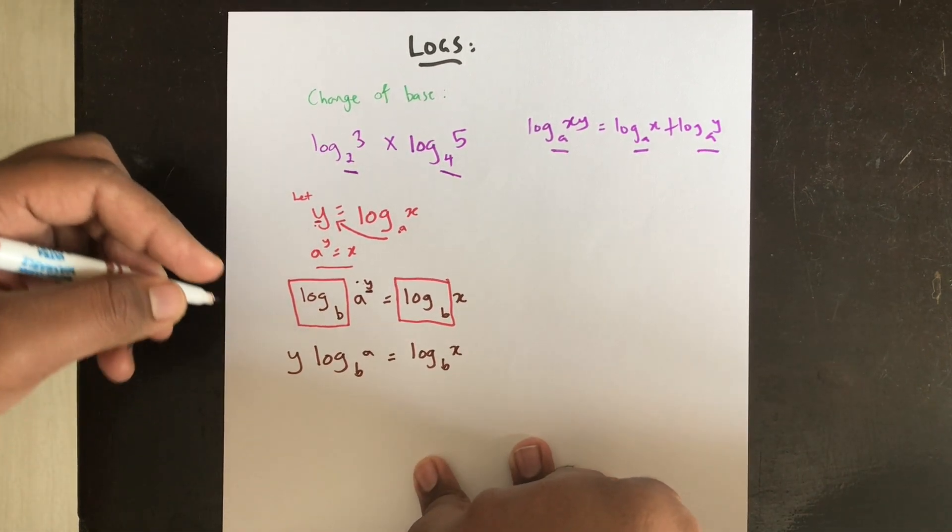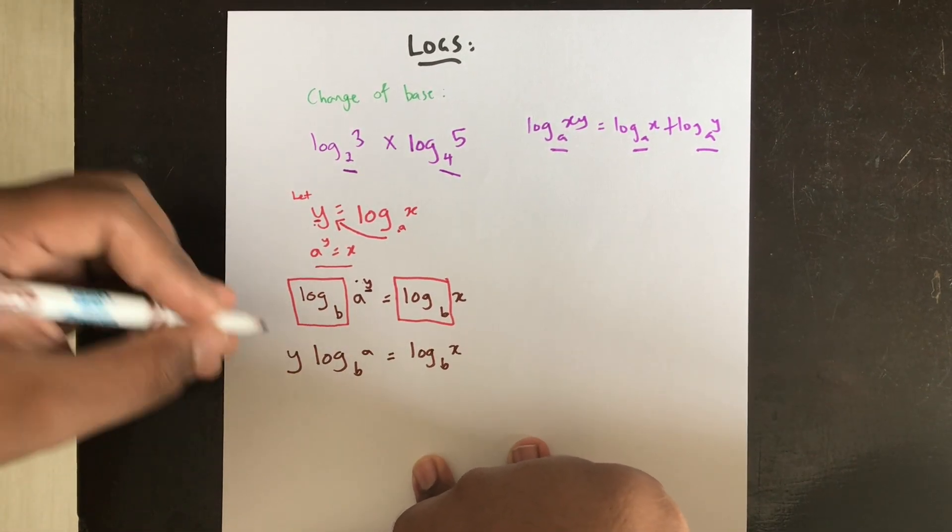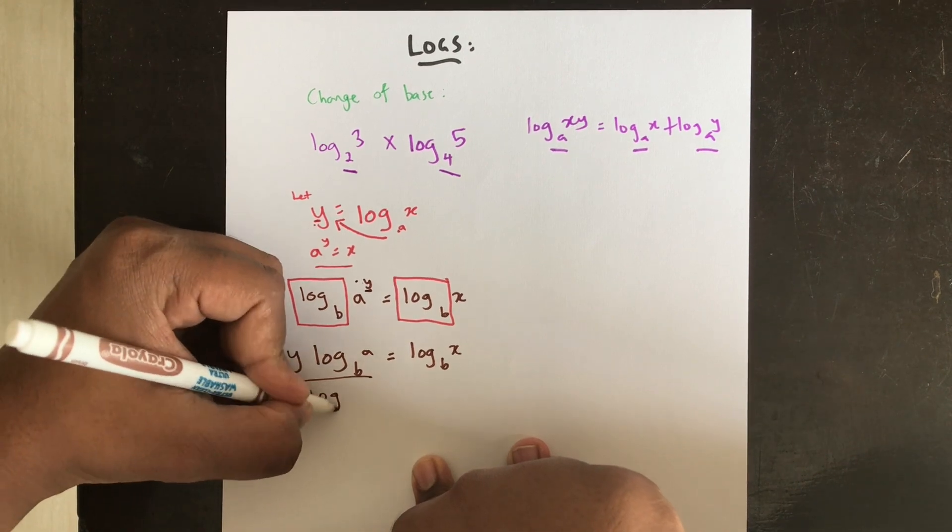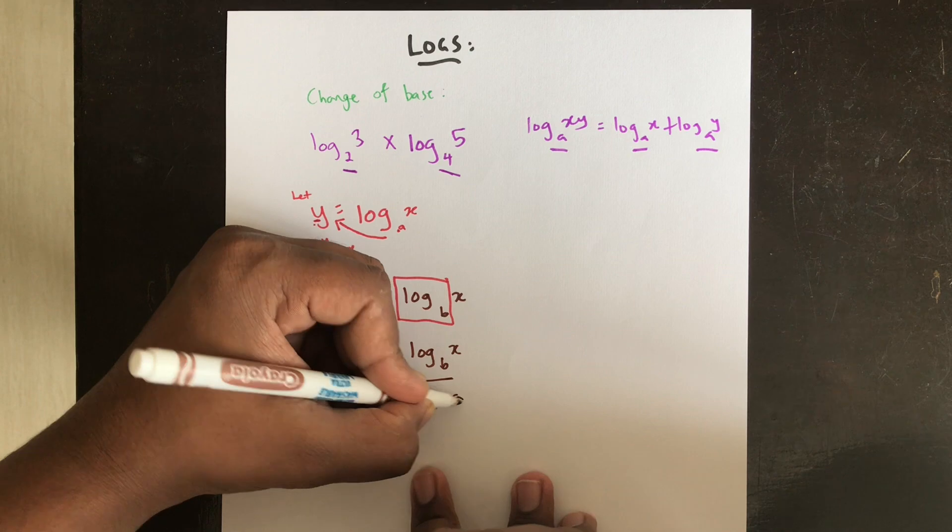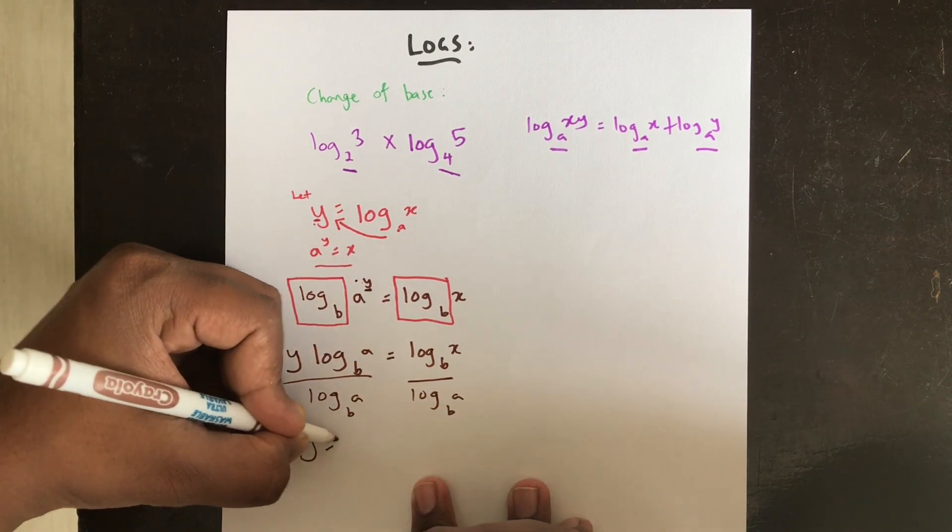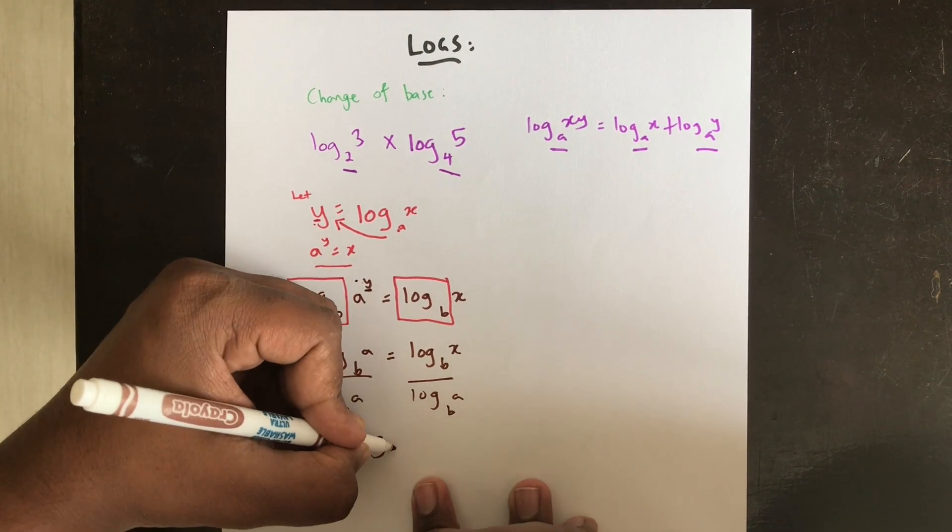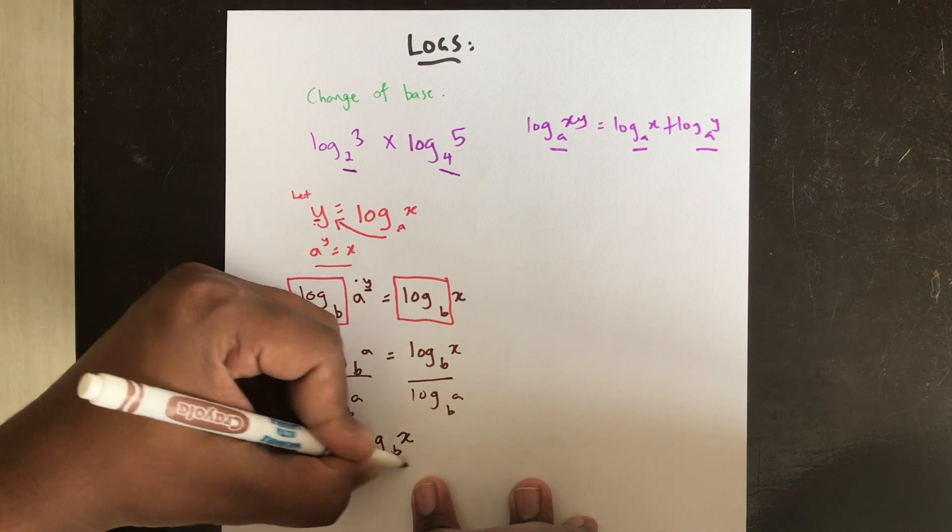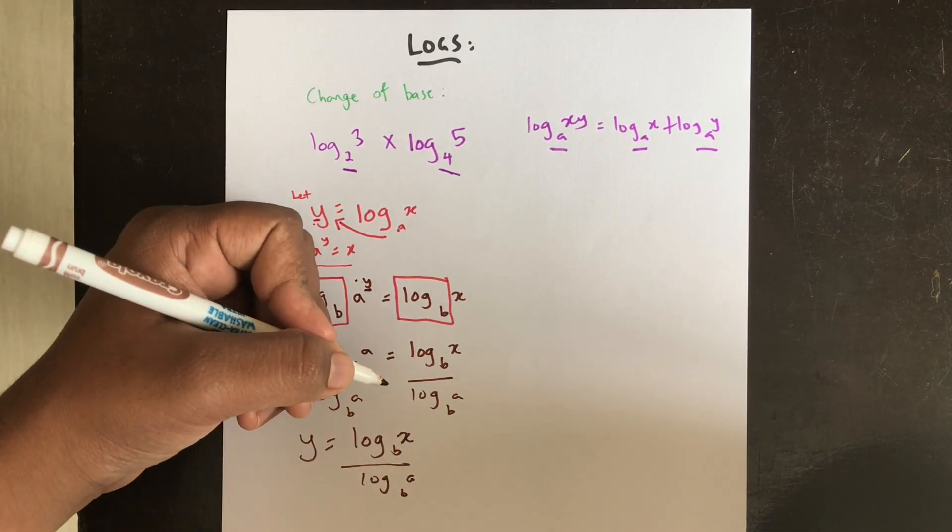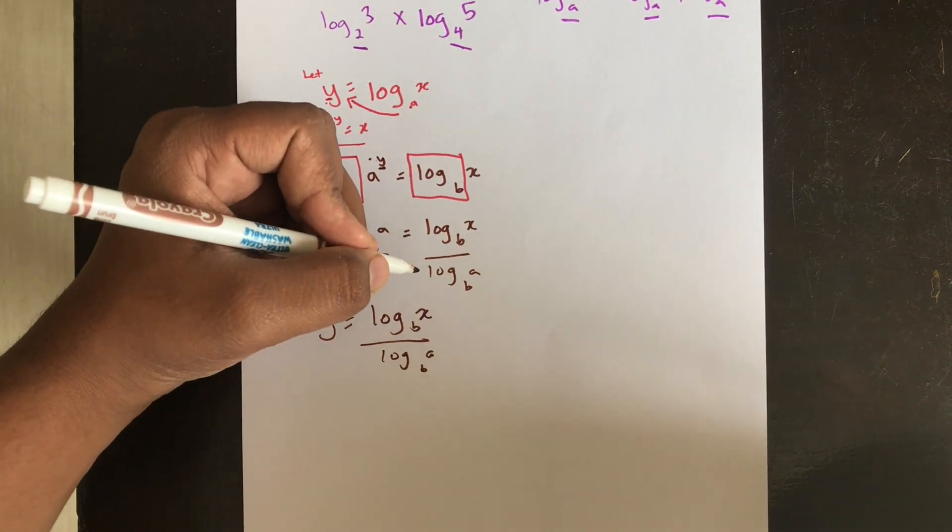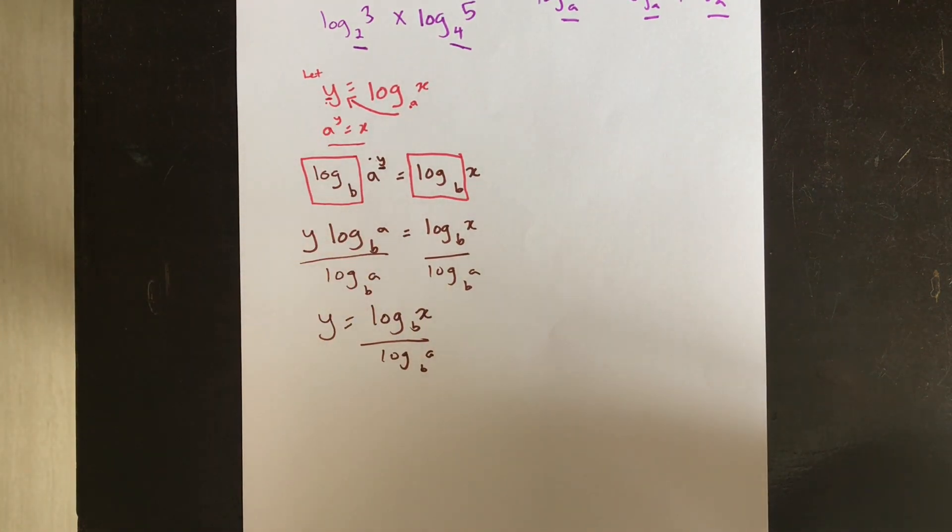Therefore, if I want to make y the subject, I'll divide both sides by log a base b. So therefore y is equal to log x base b divided by log a base b. So as you can see, I've just used simple substitutions to get y in terms of logs of both sides.